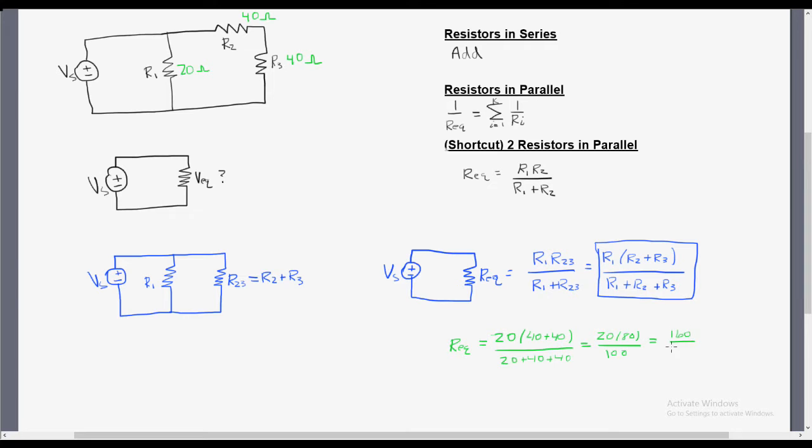Simply solving out for what Req is going to be equal to, we can represent it in its final form, which would be 1600 over 100, or which is the same thing as simply 16 ohms.